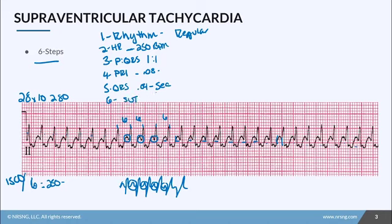Let's recap the characteristics. The rhythm with SVT will be regular. Heart rate will be anywhere from 150 to 250 beats per minute. If you have identifiable P waves, the P to QRS ratio will be one to one. The PR interval is usually less than 0.12 seconds. The QRS is less than 0.06 seconds. And because of the high chance for decreased cardiac output, we have got to do something about SVT as soon as possible.